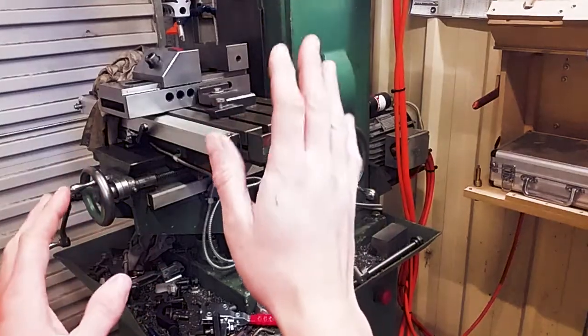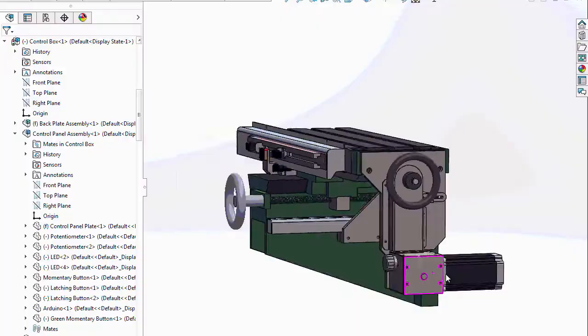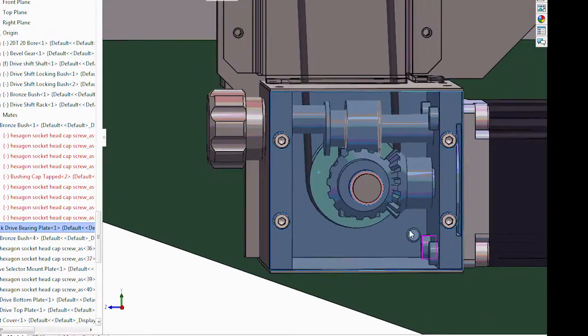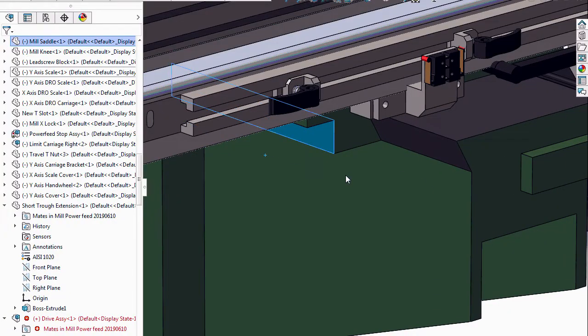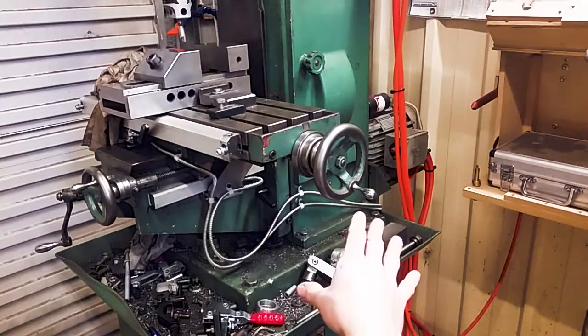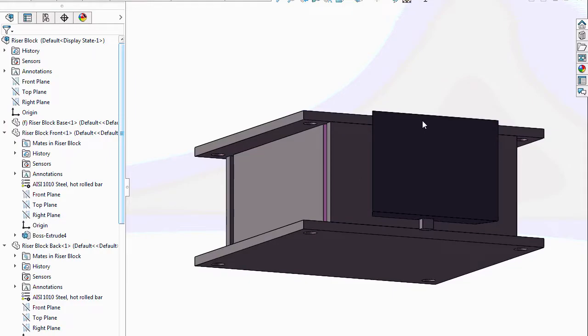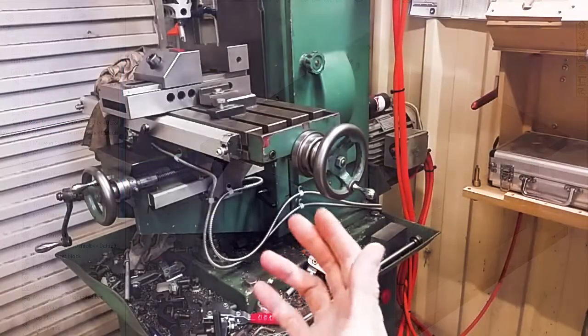The mill upgrade series is coming very shortly. So we're going to start off with a power feed. Very shortly, we'll begin on the electronics, and then from there we'll go onto the riser block, and somewhere in that we'll also do a coolant system, but that'll be a pretty small project.